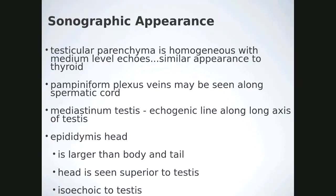Sonographically the testis is homogeneous, medium-level echoes, similar to that of the thyroid. The pampiniform plexus is the network of veins along the spermatic cord. The mediastinum testis is the echogenic band that courses and invaginates through the testicle where all vessels enter and exit. The epididymis head is larger than the body and tail, which we often don't see unless enlarged. The head is situated superior to the testis and is typically isoechoic to the testis.